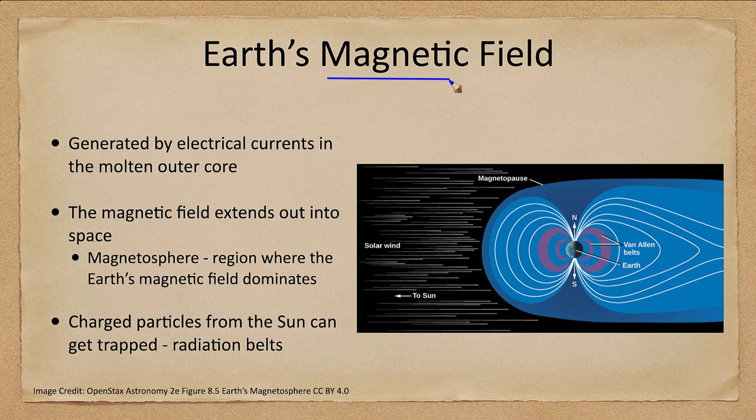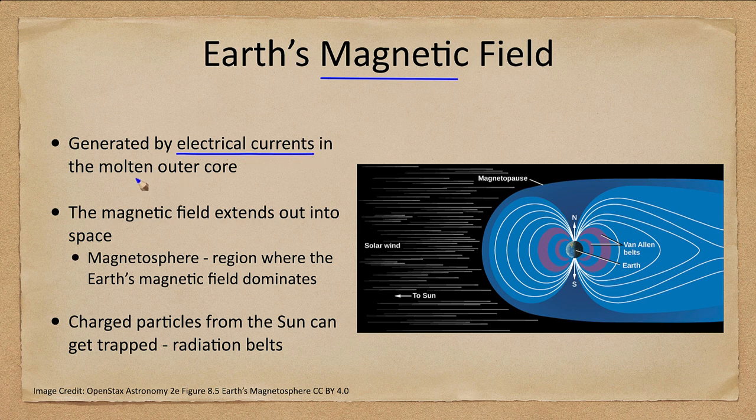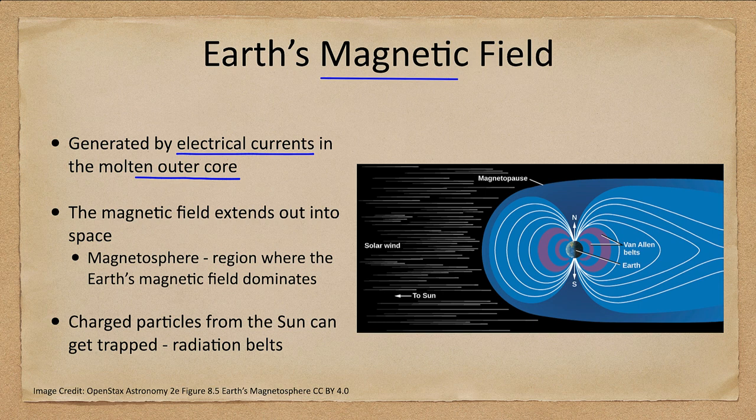Now we also want to look at Earth's magnetic field. And how do we look at this? This is outside Earth's core, but it actually is generated by electrical currents in the outer core. When you have a moving electrical field, you will create a magnetic field. And electrical currents within that liquid metal in the core will then generate a magnetic field around Earth.